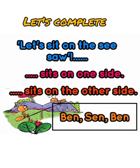Next: "Let's sit on the seesaw" — who says that? Dash sits on one side. Dash sits on the other side. In the box we see: Ben, Sen, Pen. Find the suitable word from the box.